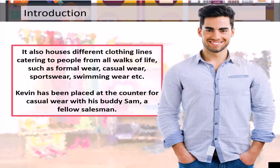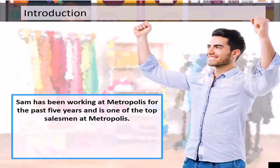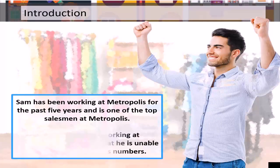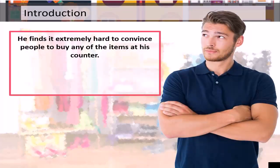Kevin has been placed at the counter for casual wear with his buddy Sam, a fellow salesman. Sam has been working at Metropolis for the past five years and is one of the top salesmen. Within a month of working, Kevin finds that he's unable to make any great sales numbers and finds it extremely hard to convince people to buy any of the items at his counter.